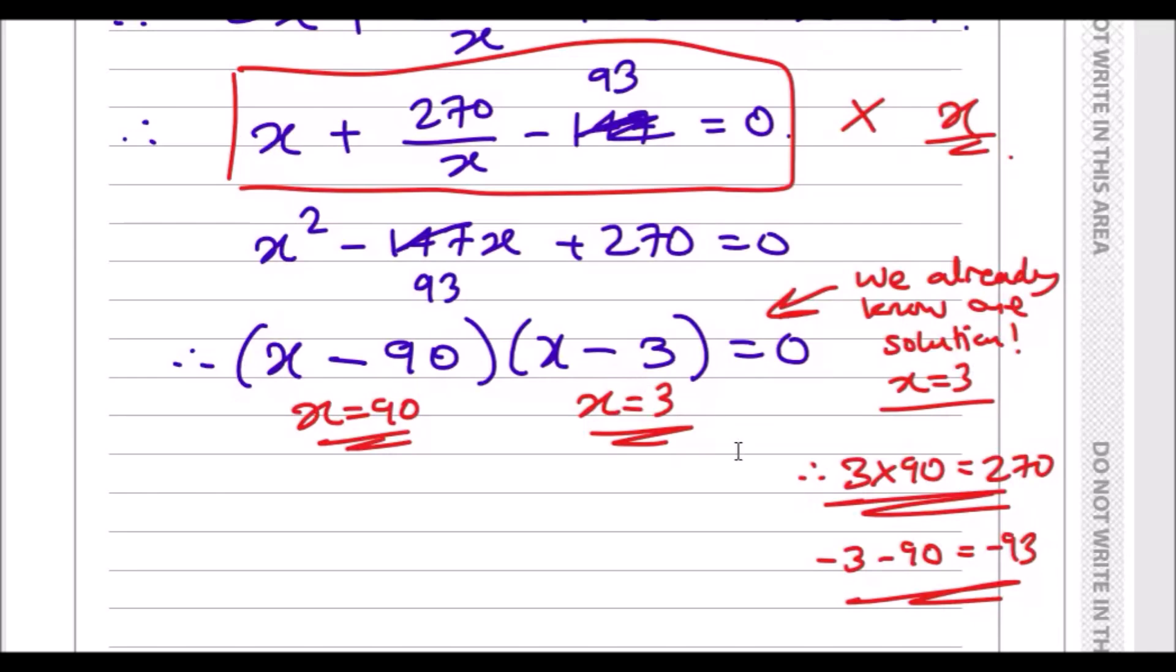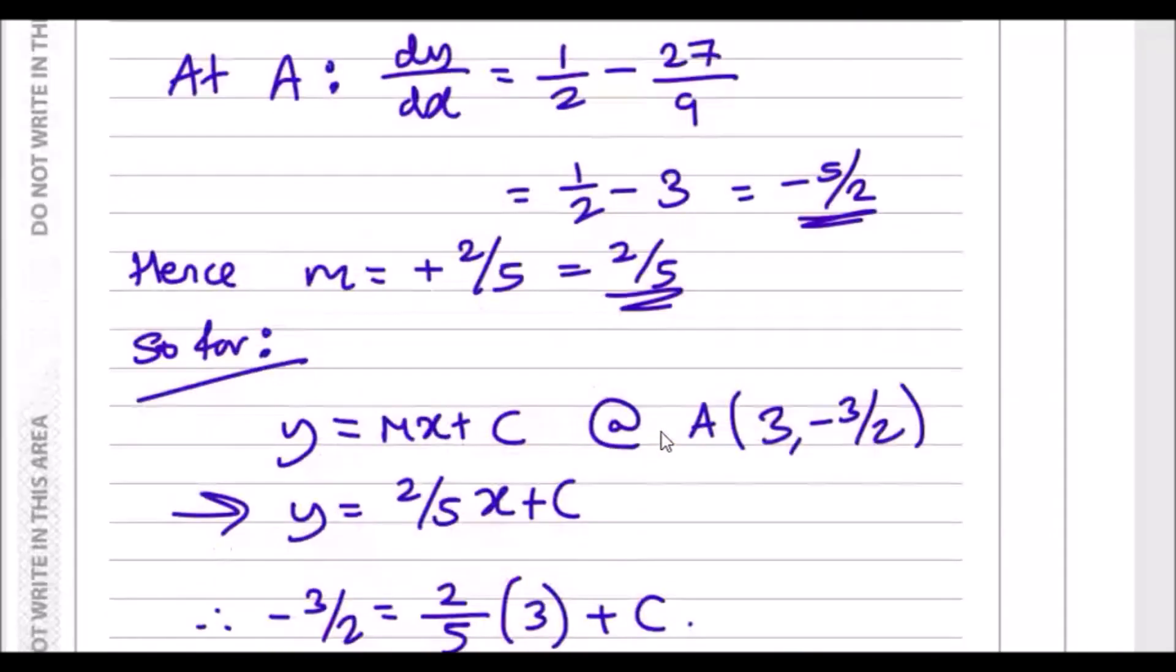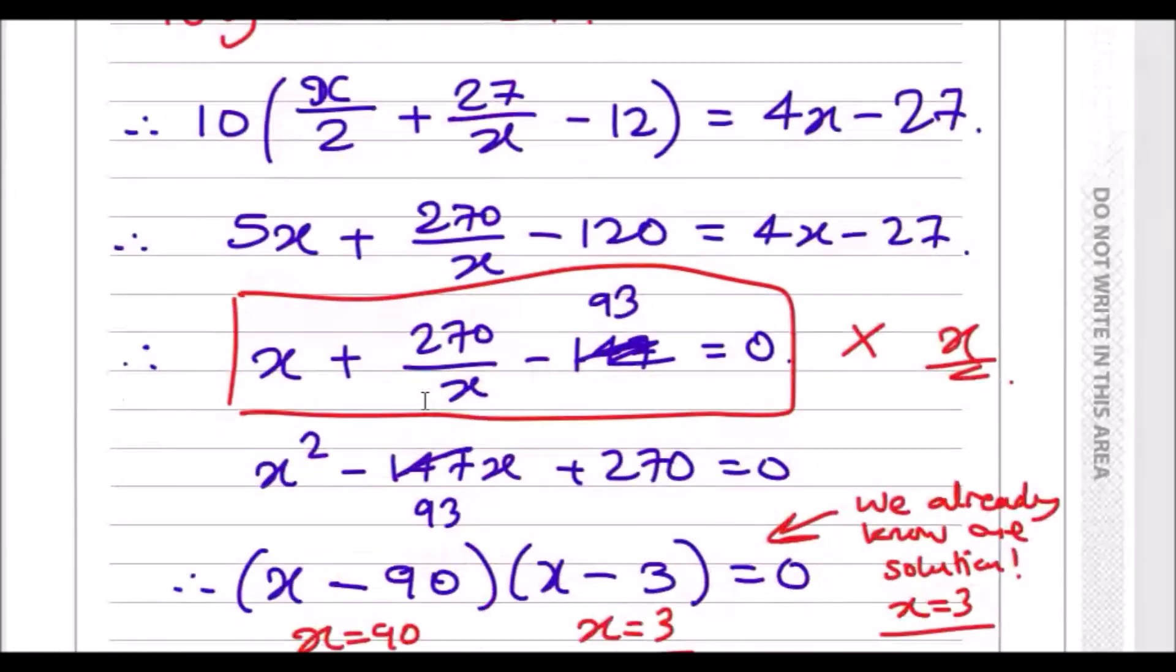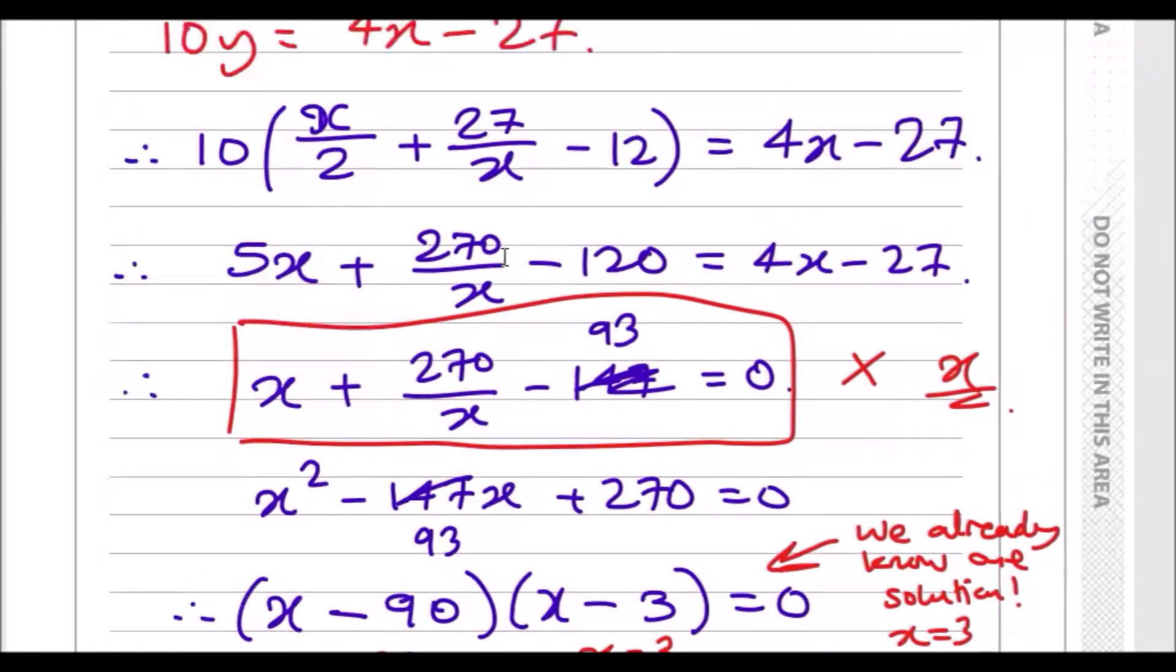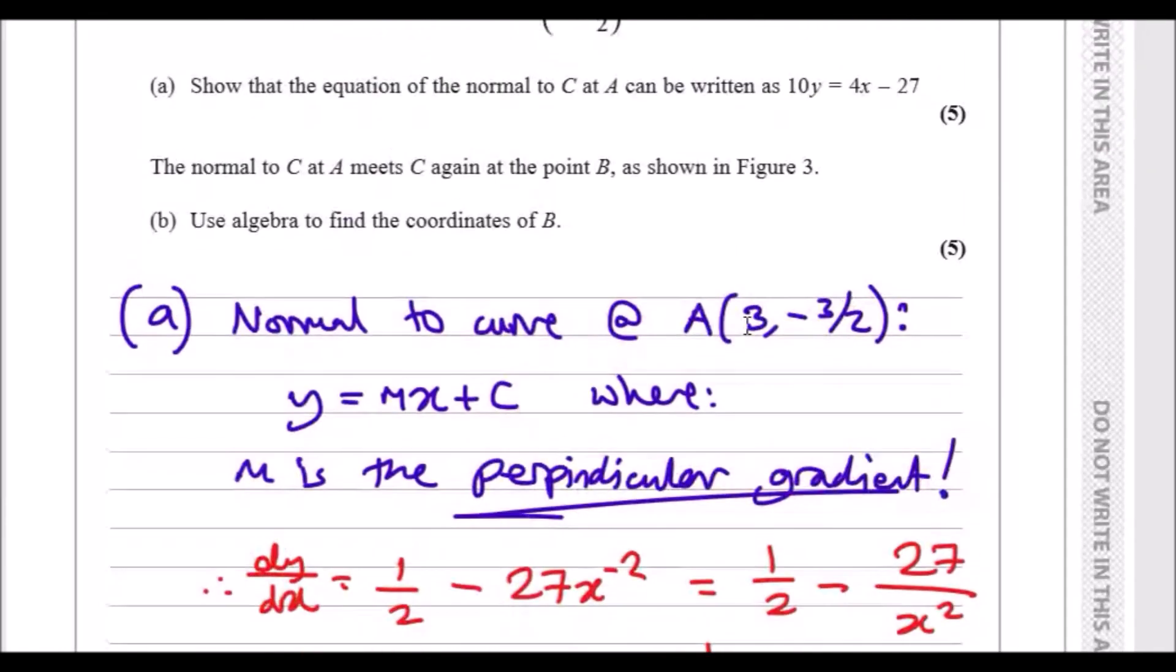And B is what we're trying to find. Because we know one of them is 3, so I plugged in 3 here, and we just need to realize that 3 times something will give us 270, and that has to be 90. 3 times 90 is 270, and actually coincidentally, well not coincidentally, they done it on purpose, minus 3 minus 90 also gives us minus 93. And that's it, you've done it. You've got your x coordinates, so you know that this first one is the x coordinate of A. This coordinate for B, that's what we want. We want to find the coordinates of B.